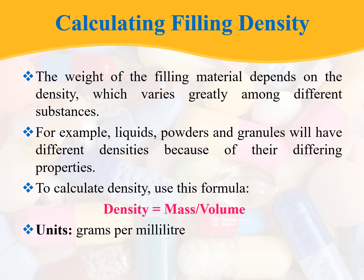Density varies greatly among different substances. For example, liquids, powders, and granules will have different densities because of their differing properties. The basic formula for calculating density is mass divided by volume, and the units of density are grams per millilitre. Based upon this, you calculate the filling density in order to determine the total fill weight for a particular mixture.